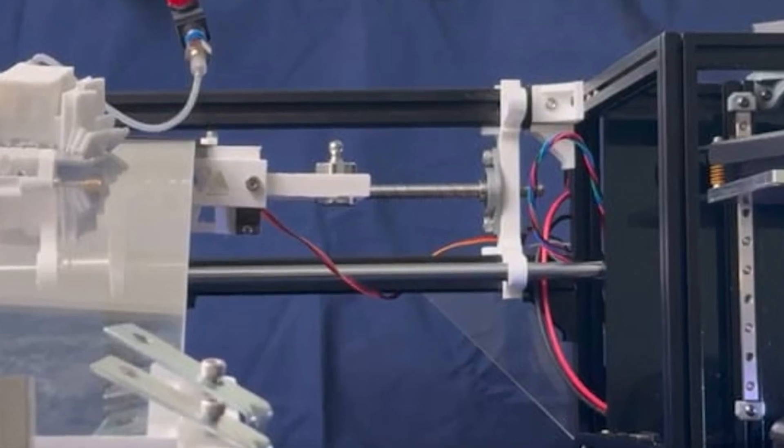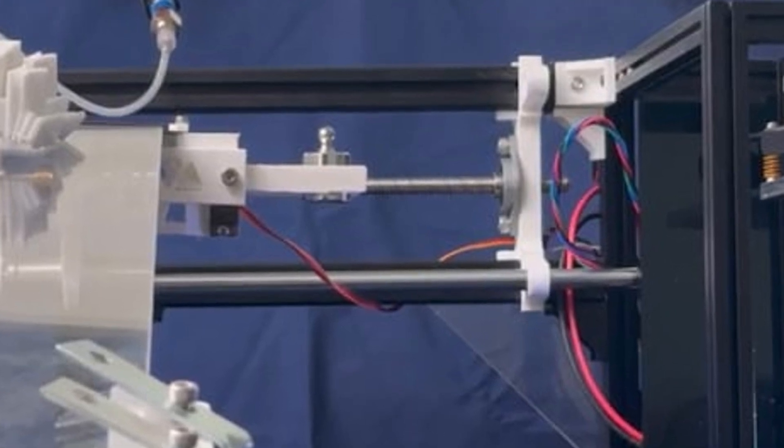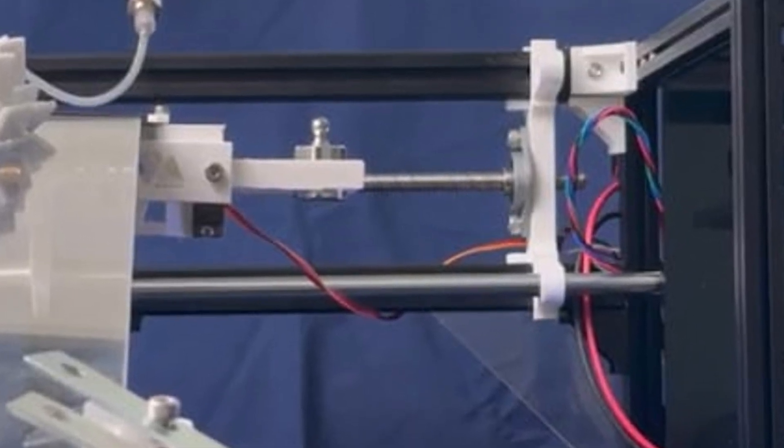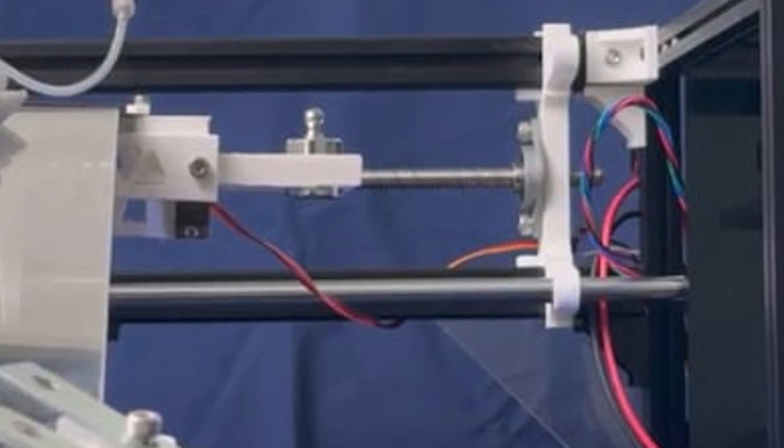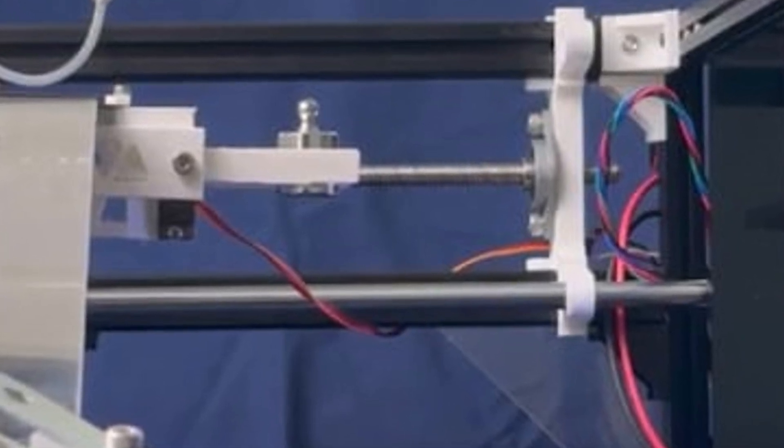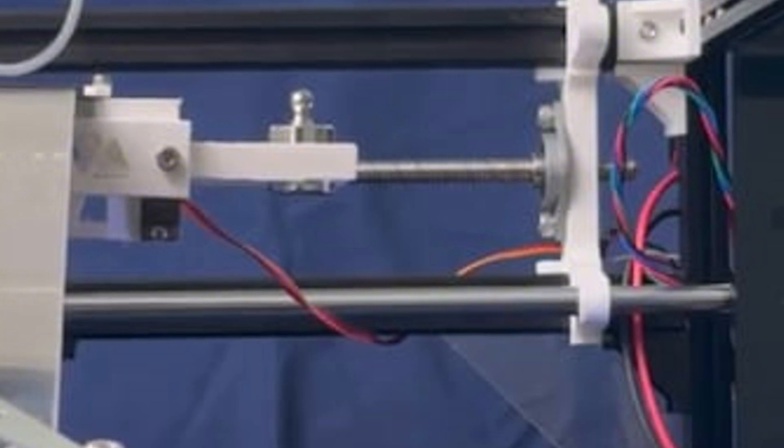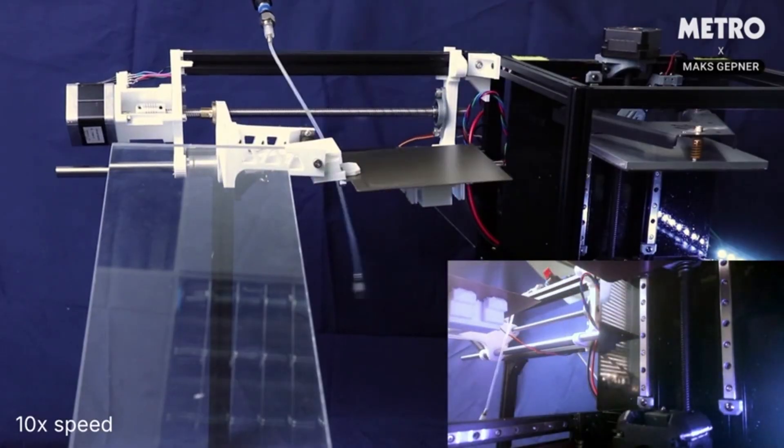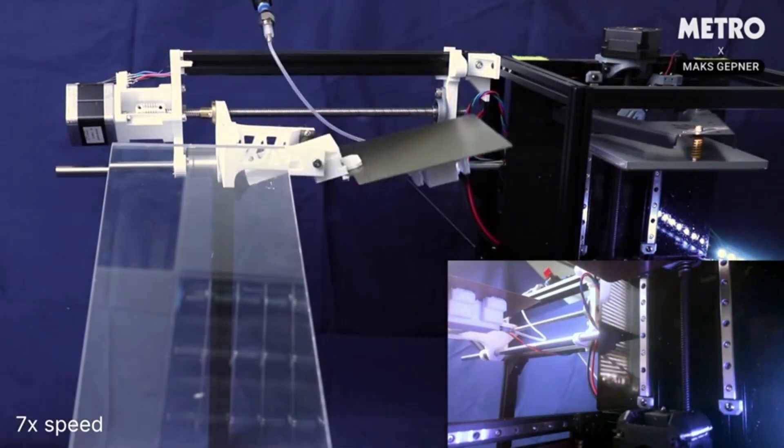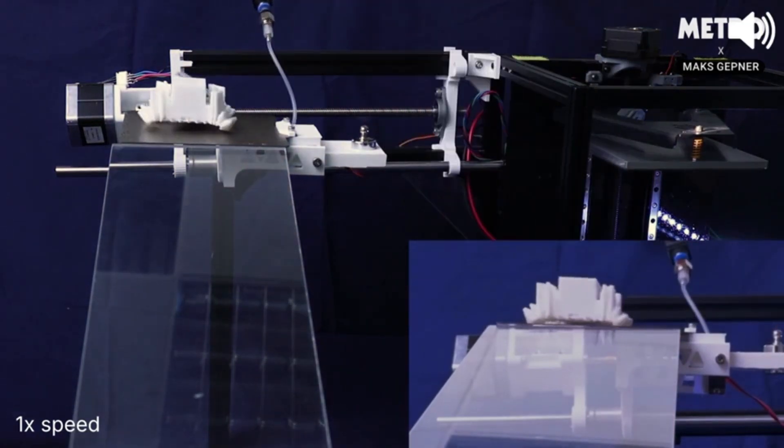Normally, 3D printers work by laying down layers of material one at a time until the entire object is formed. But this process is slow and can be clunky, especially when you're trying to create complex shapes. Plus, once you're done, you often have to spend hours carefully assembling all the parts together, not to mention the potential for errors or damage during the assembly process.